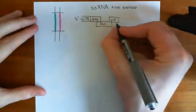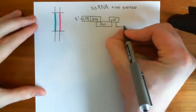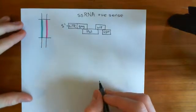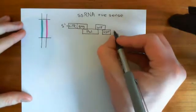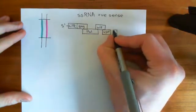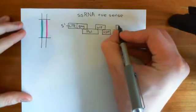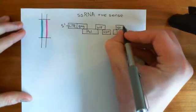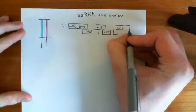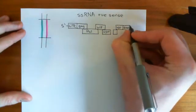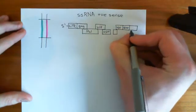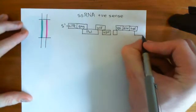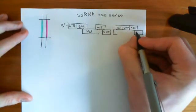Then here we had VPR. Then we had these TAT genes here — so here's a TAT gene, and then there was another TAT gene further along, which we'll come to in a moment. Then here is VPI, followed by ENV here, followed by NEF here. And then finally, you have the long terminal repeats, the 3' long terminal repeats here.